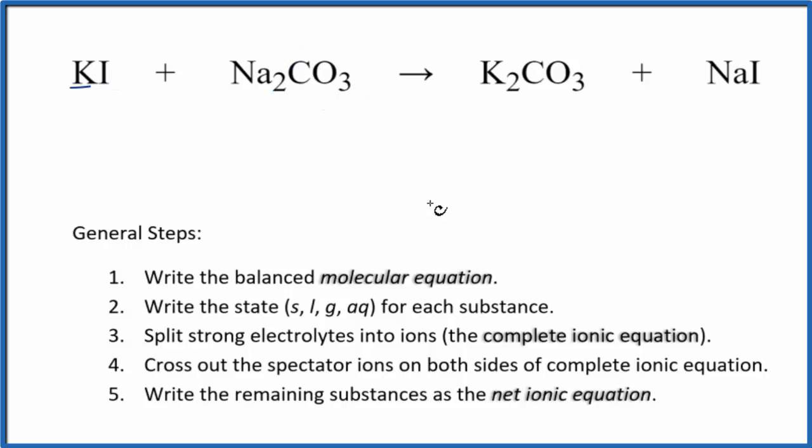First thing we need to do, we need to balance the molecular equation. We see we have one potassium here and two here. So let's put a two in front of the potassium iodide. Now we have two iodine atoms, put a two here, and that balances the molecular equation. Now we need to write the states for each substance.